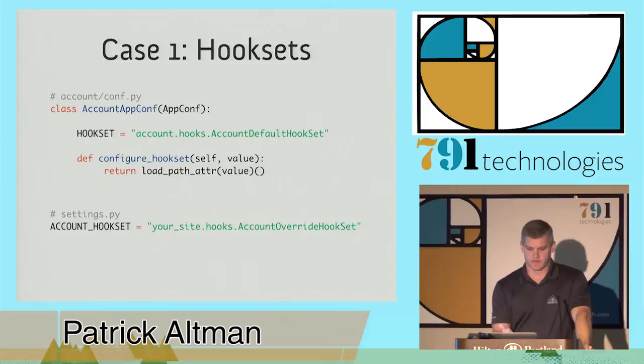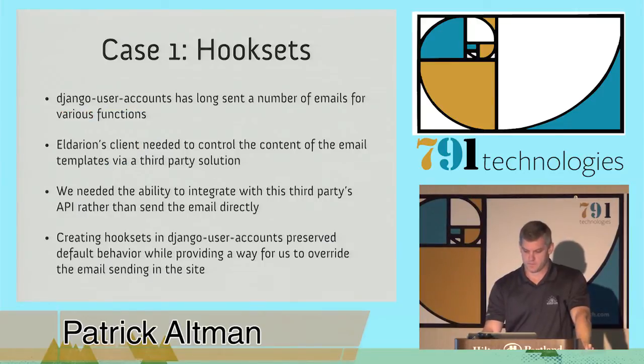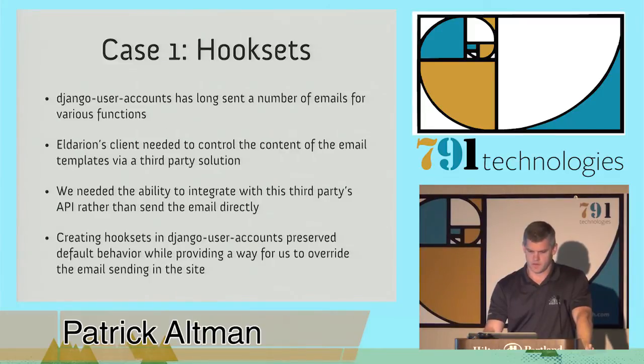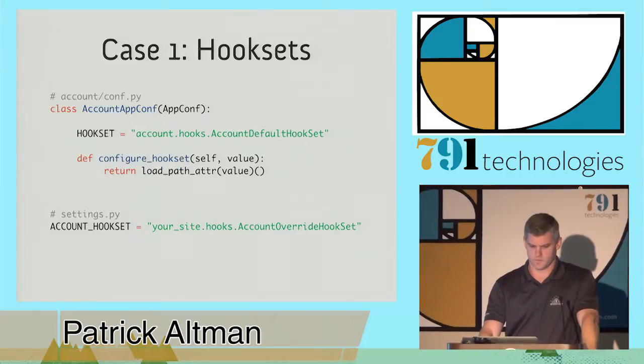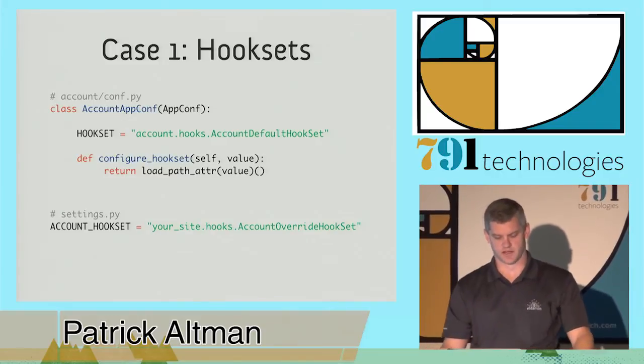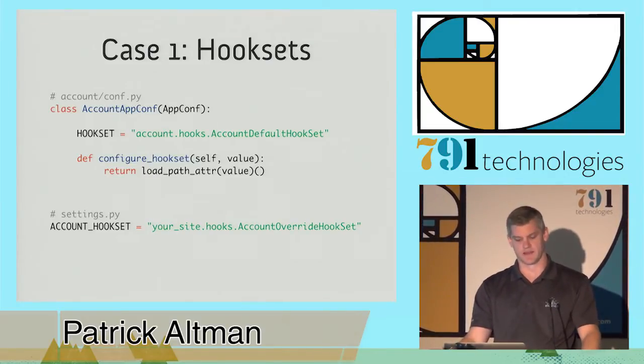So here in our conf module, you can see we use Janus Lydell's Django app conf for application settings. It's a fantastic way to encapsulate all the settings in your reusable app. We ship with default hook set configured in this hook set property of the main conf module. But to override it, it's as simple as creating your own class and inheriting from the base hook set, putting it somewhere in your site, and then setting the account hook set setting in your settings.py.